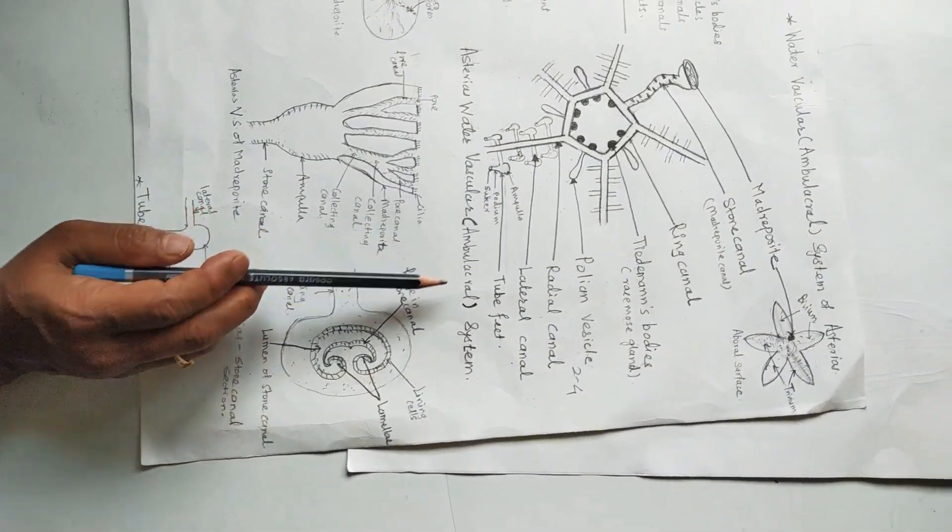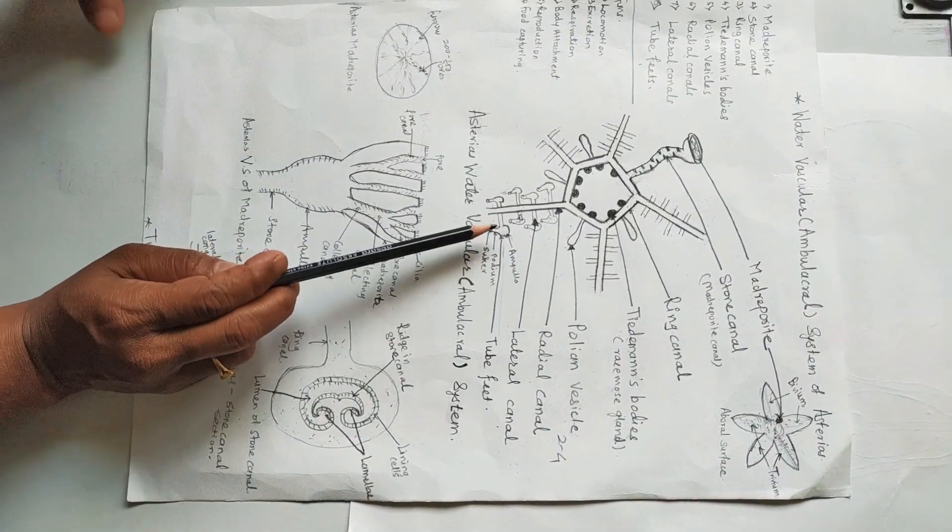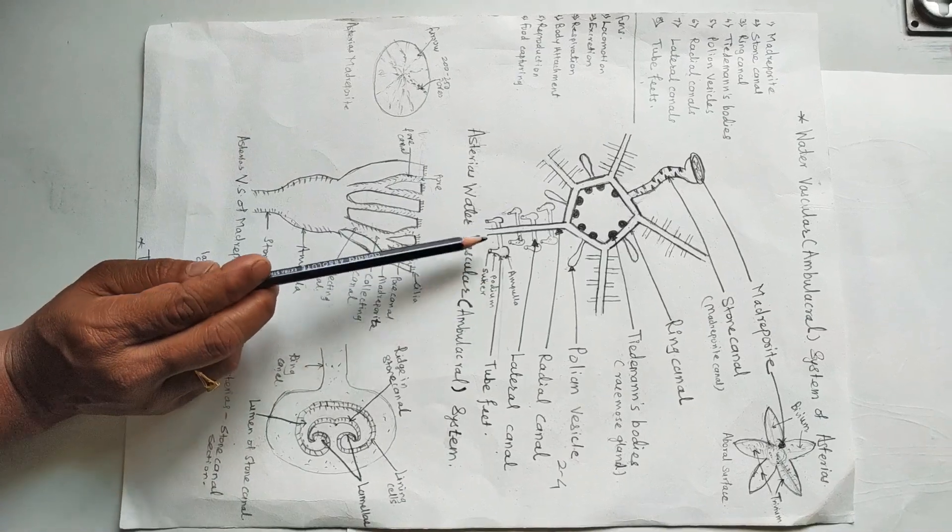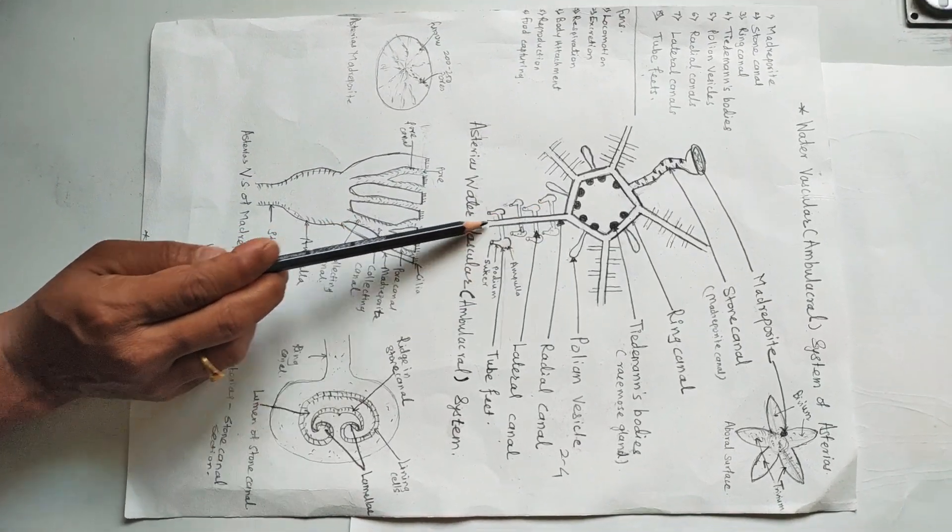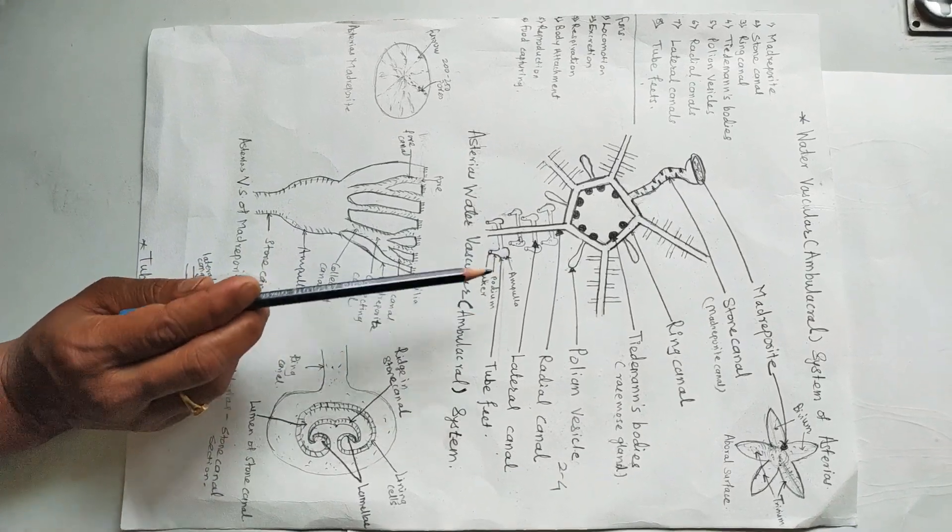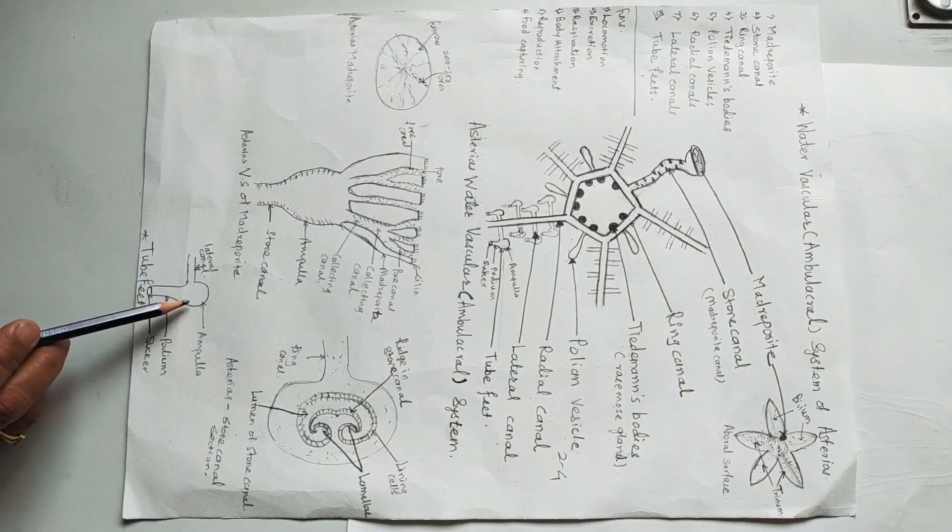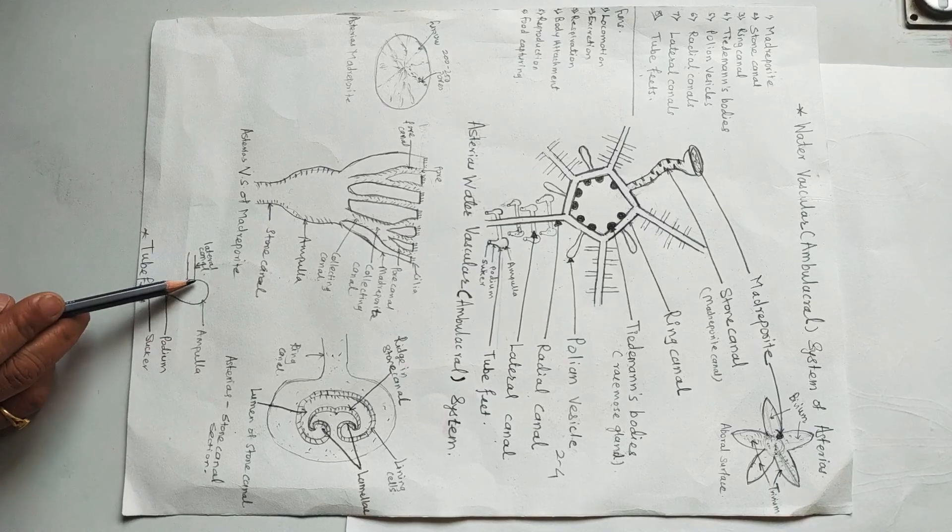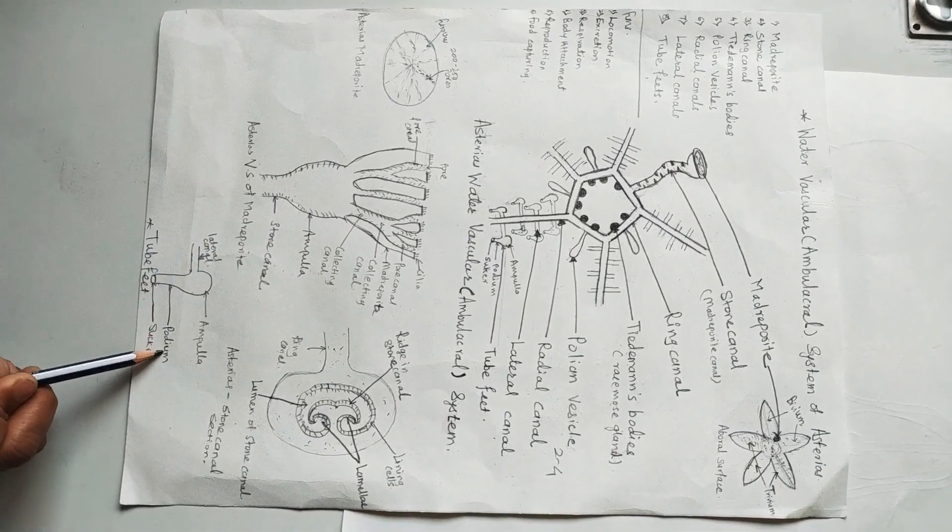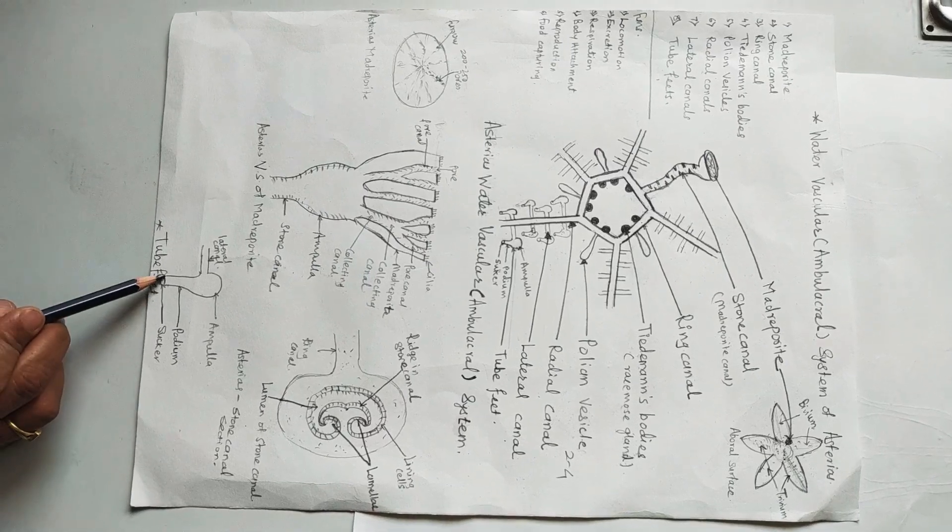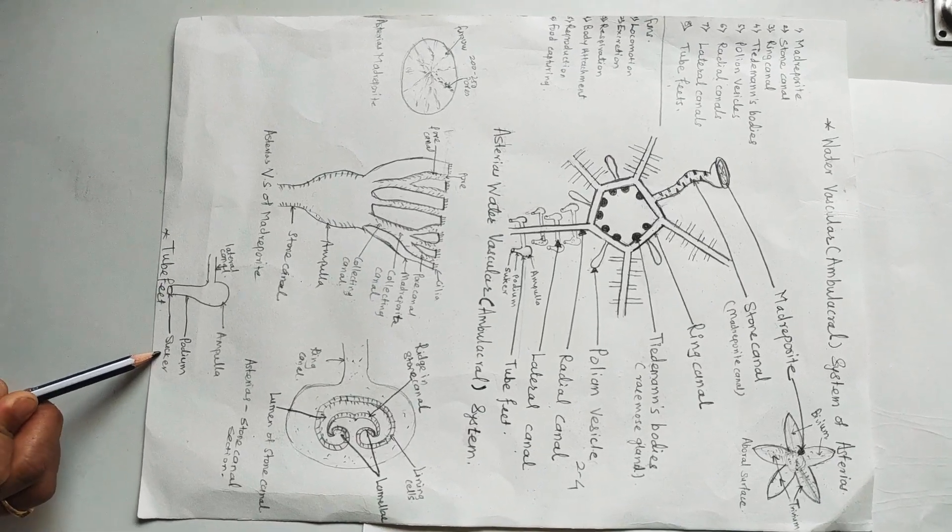Next structure is the tube feet. Tube feet are actually present in two alternating rows, but they may appear as four rows. Each tube foot consists of three parts. The swollen part is called ampulla, tubular part is called podium, and the disc-like terminal part is called sucker.